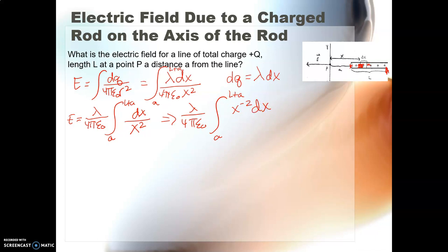So remember when we do integrals, we add to the power and we divide by that final power. So if we add to the power, that's going to become a negative 1. And so I'm going to get, here are my constants again, λ over 4πε₀. And here I'm going to get negative 1 over x from a to L plus a.